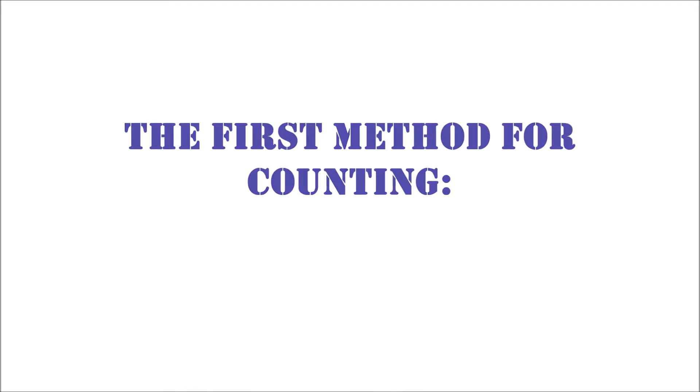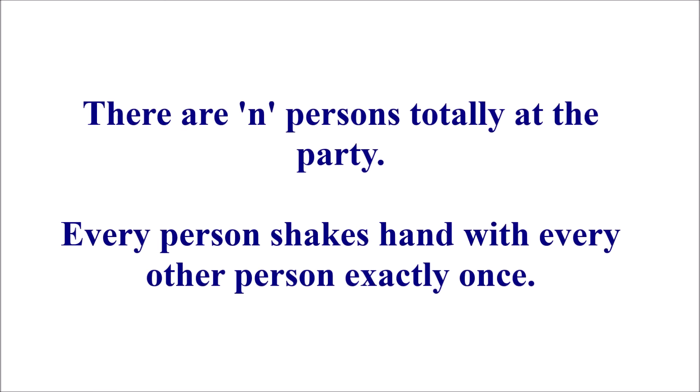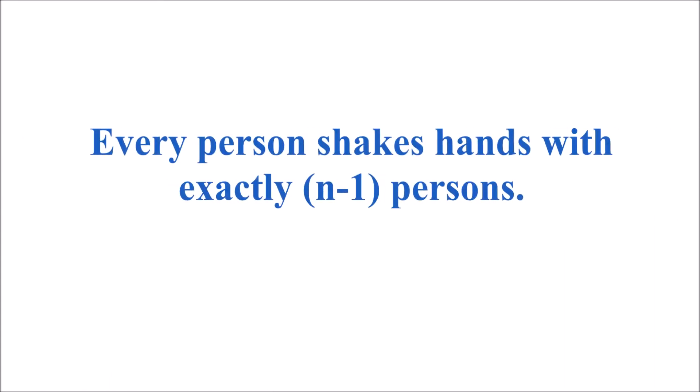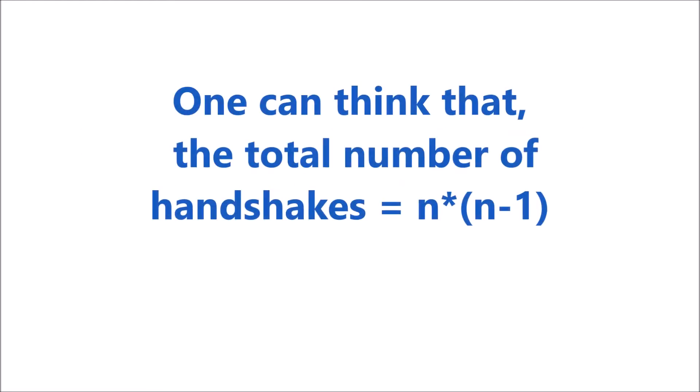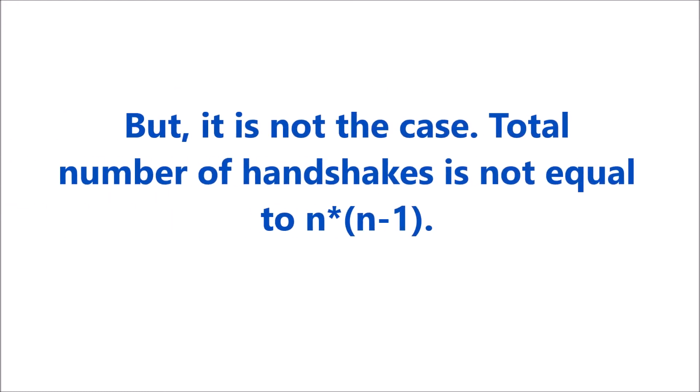There are n persons at the party and every person makes a handshake with every other person. So every person makes a handshake with exactly n-1 persons, and there are n persons. So one might think that the total number of handshakes is n times n-1, but that is not the case.